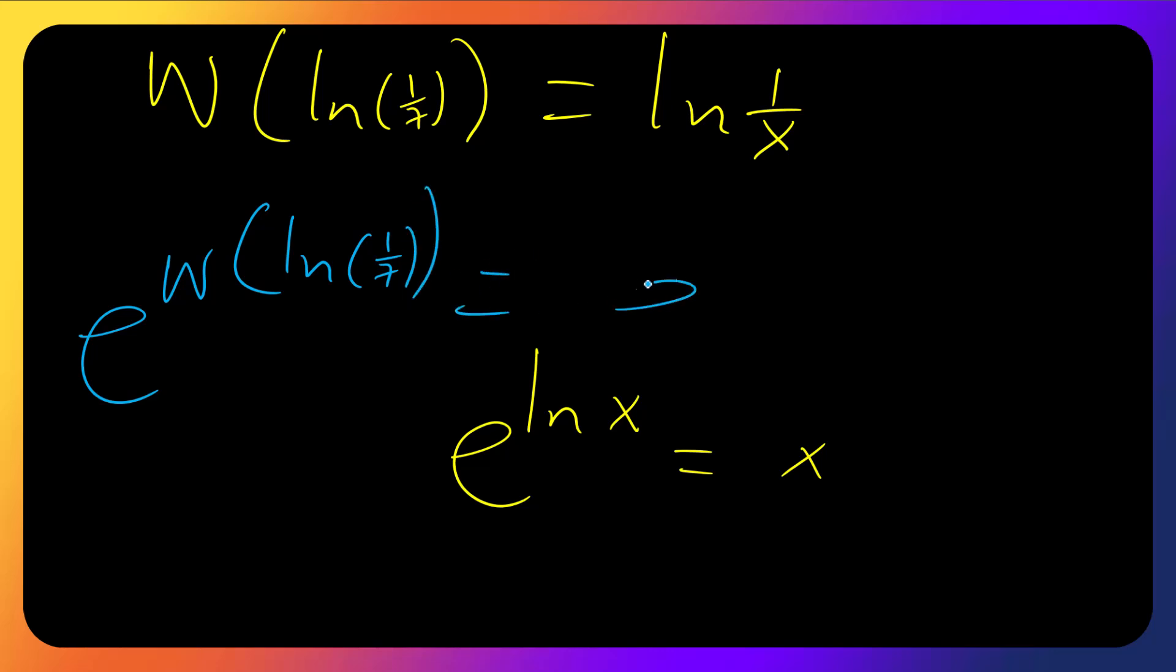We have W function of ln of 1 over 7 here and ln of 1 over x. Now let's resolve this. Since we have ln of x, don't forget this rule: e raised to ln of x is x. So let's raise both sides with e.